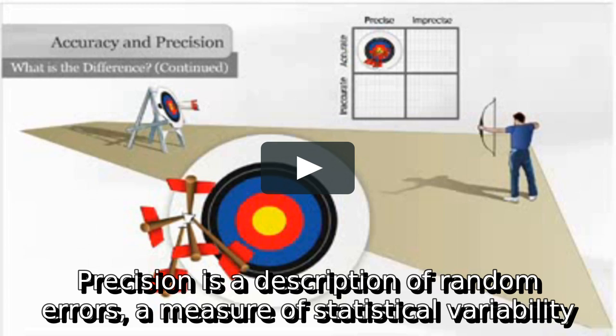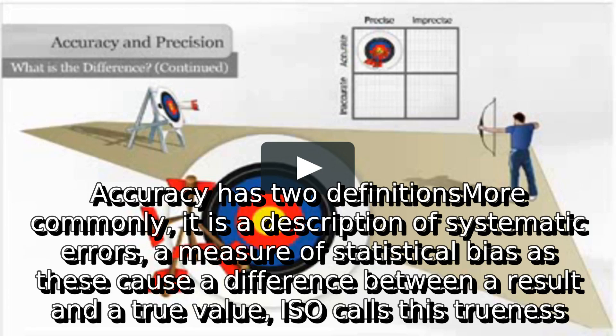Precision is a description of random errors, a measure of statistical variability. Accuracy has two definitions. More commonly, it is a description of systematic errors, a measure of statistical bias. These cause a difference between a result and a true value. ISO calls this trueness.